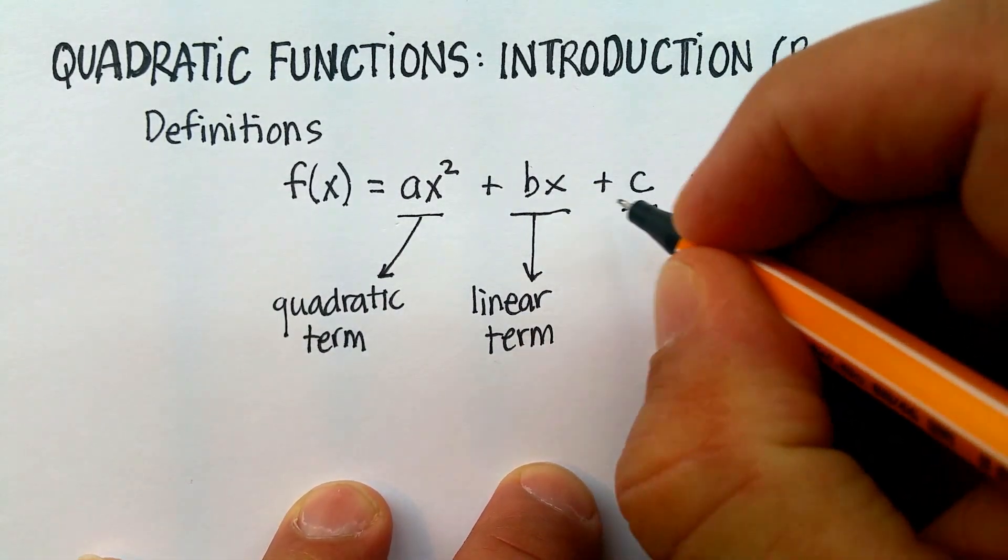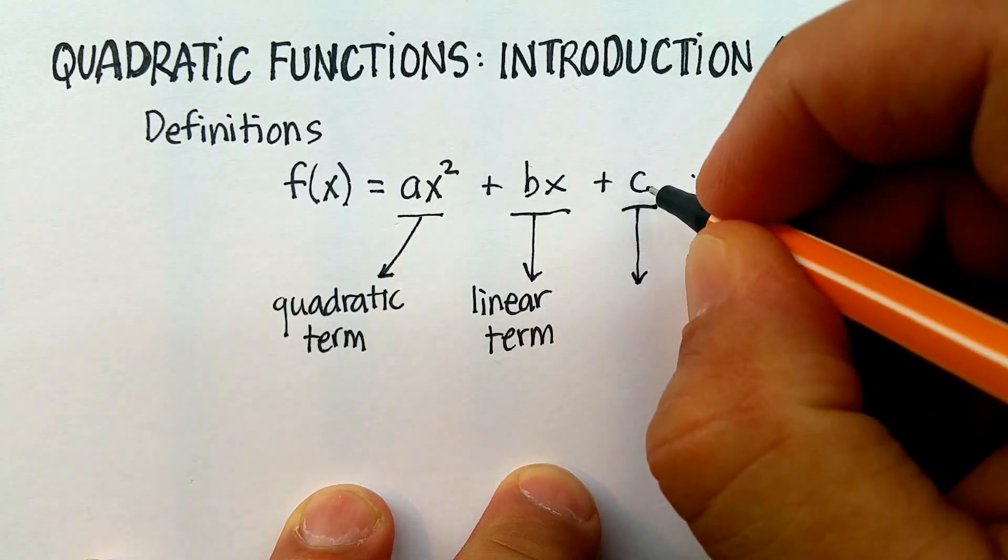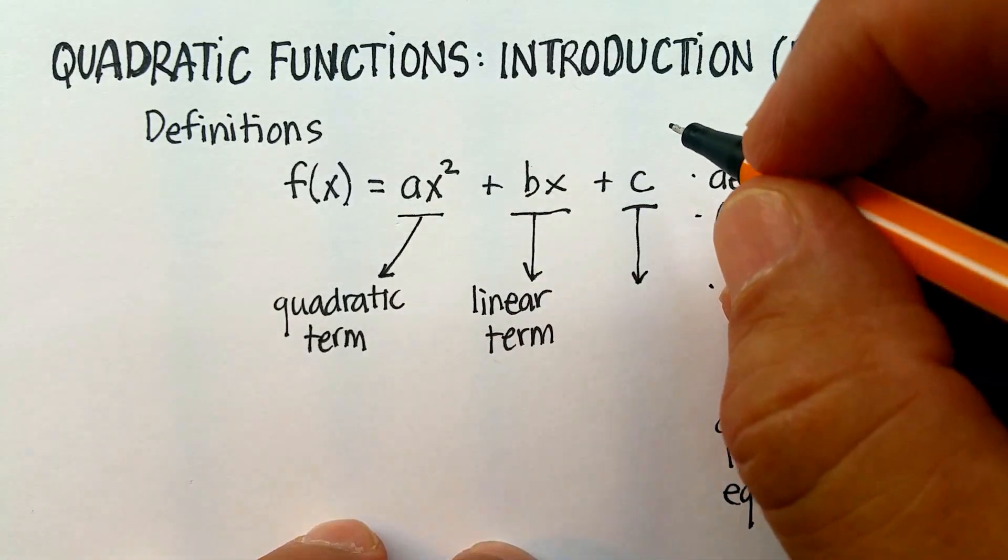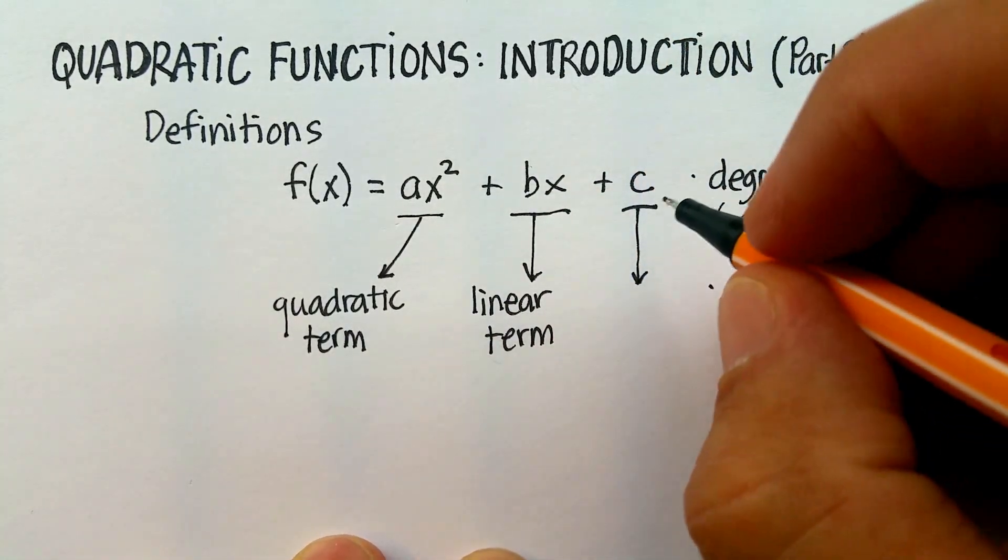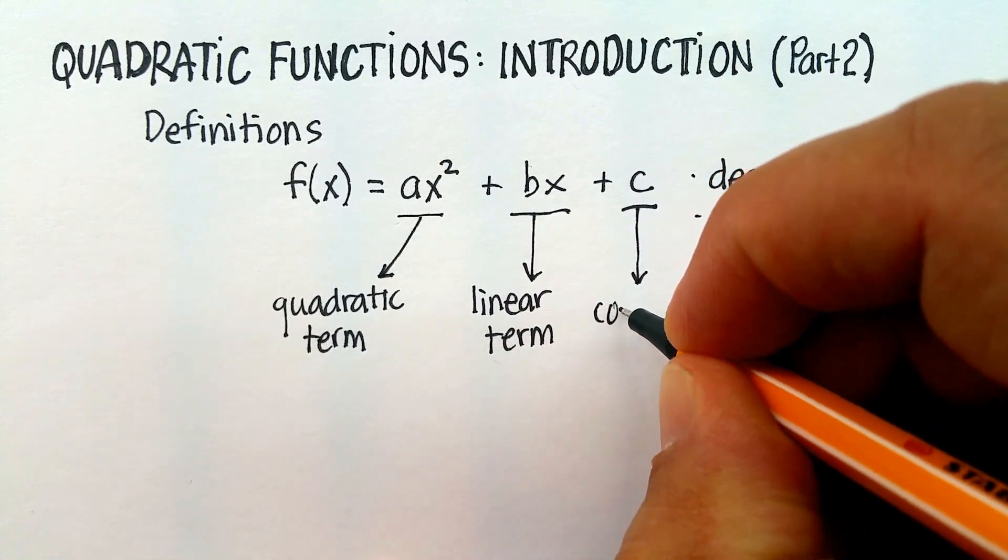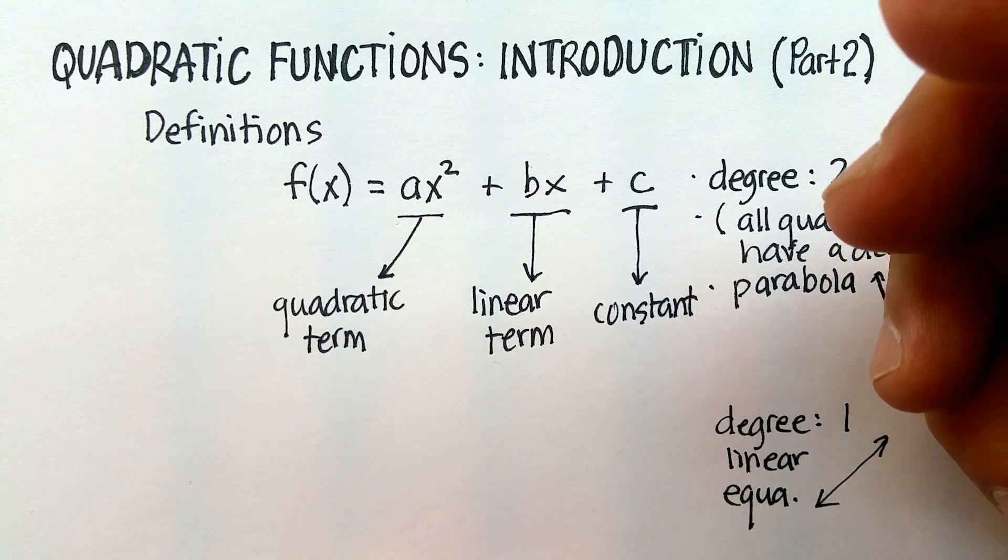And finally, this last term, that doesn't really have the x in there at all, it's really just some number. The a, the b, and the c, by the way, are called coefficients. I'll talk about that in a second. But this number is just called the constant.